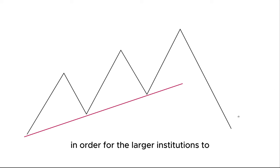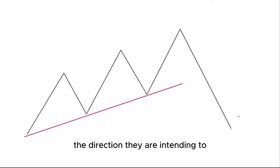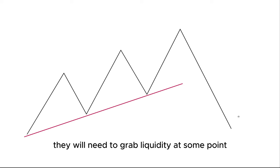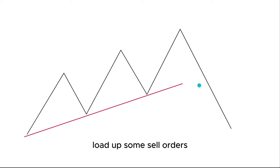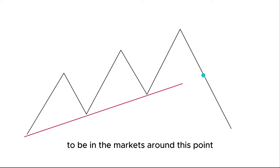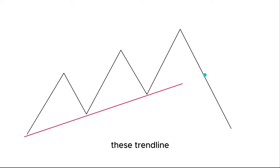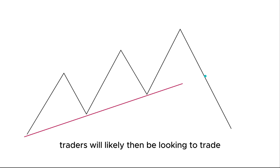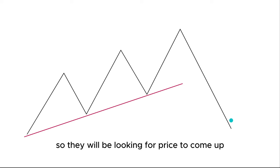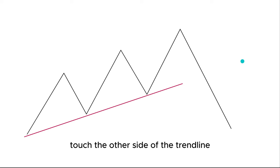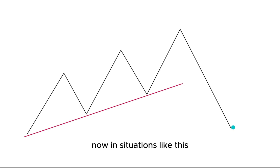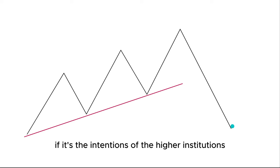In order for the larger institutions to continue pushing price in the direction they intend, they will need to grab liquidity at some point. So they will need to load up some sell orders, which will anticipate traders to be in the markets around this point when price touches this trend line once again. Once this area is broken, these trend line traders will likely be looking to trade the retest — looking for price to come up, touch the other side of the trend line, and continue going short.